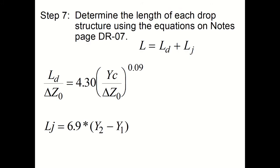Next is to determine the size of the drop structures. These can be obtained from the equations below, and there are some derivations of these equations or a full list of the equations on notes page DR-07, which is part of the scanned notes. So the entire length of the drop structure would be the length of the drop plus the length for the jump. The first equation below allows you to solve for the length needed for the drop, and the second equation gives you an estimate of the length for the hydraulic jump.